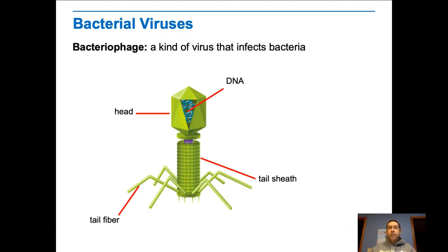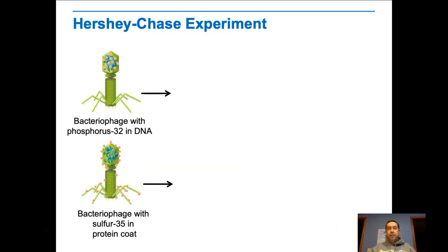The next experiment involves something called a bacteriophage, which is a specific kind of virus that infects bacteria. The one they worked with is T4. What Hershey and Chase did was they wanted to confirm the results of the Avery experiment. A virus is basically just two things: it's genetic information — DNA — and protein. That's pretty much all there is.